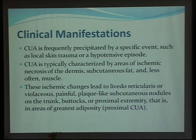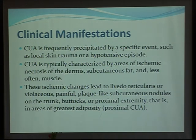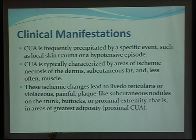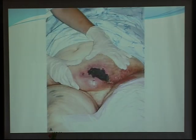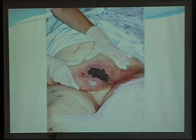The clinical manifestations of calciphylaxis are frequently precipitated by specific events such as local skin trauma or hypotension. It is typically characterized by areas of ischemic necrosis of the dermis and subcutaneous fat, and less often muscle in severe cases. These skin changes lead to painful, plaque-like subcutaneous lesions on the trunk, buttocks, and proximal extremities — that is, in the areas of greatest adiposity. This type of calciphylaxis on the trunk is usually called proximal calciphylaxis, and the skin lesions can be fatal.